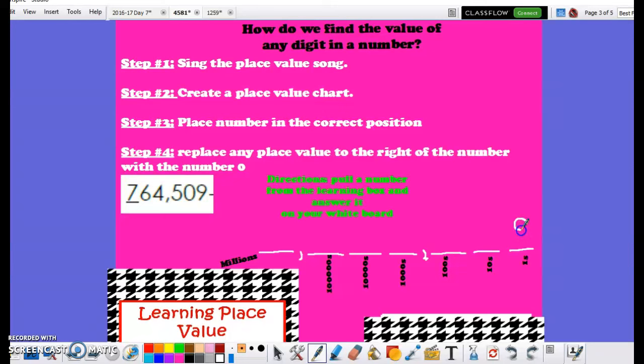So I know that the nine is in the ones, the zero is in the tens, the five is in the hundreds, the four is in the thousands, the six is in the ten thousands, and the seven is in the hundred thousands. Now many of you already know what the value of the seven is, just based on the fact that there's the place value that it's in. However,